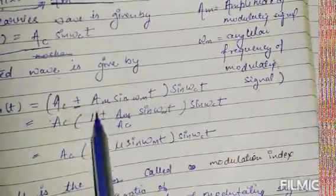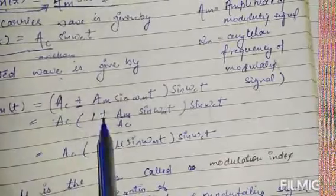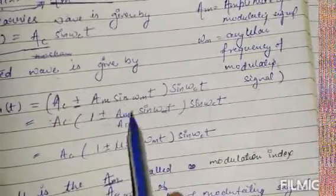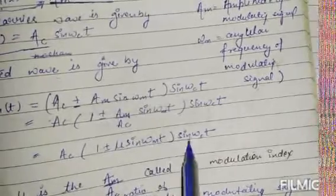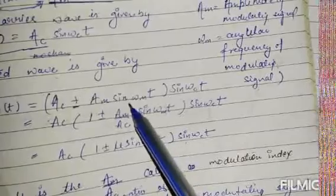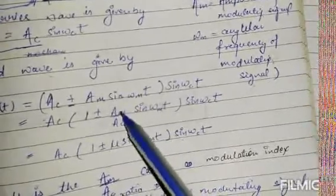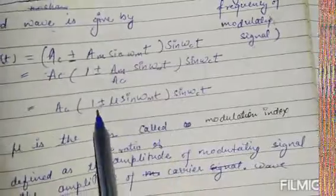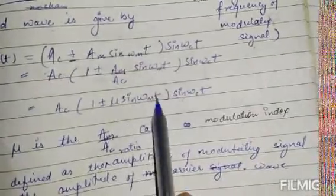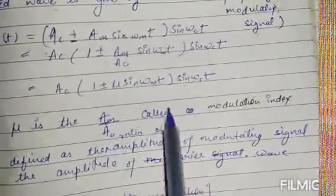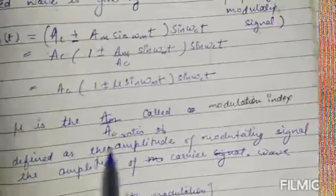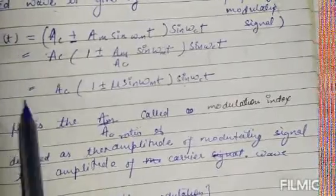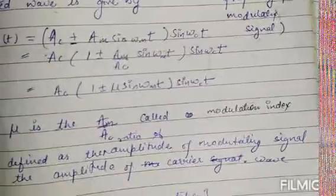The modulated wave is given by: cm(t) = Ac(1 ± μ sin(ωm·t)) sin(ωc·t), where μ = Am/Ac. This ratio μ is called the modulation index, defined as the ratio of the amplitude of the modulating signal to the amplitude of the carrier wave.